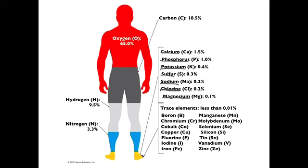Past that, we have what are called trace elements — things your body needs to survive but not at very high levels. They're present at such low quantities that they're basically just a trace. You don't need to memorize all of these, but you should be familiar with what a trace element is and be able to recognize a few of them: boron, chromium, cobalt, copper, fluorine, iodine, and iron — iodine and iron are probably ones you should know are trace elements — manganese, molybdenum, selenium, silicon, tin, vanadium, and zinc. Those are the chemicals your body must have to operate.